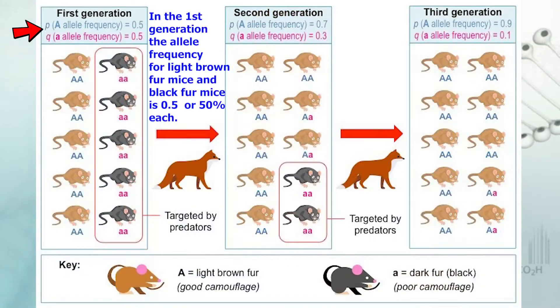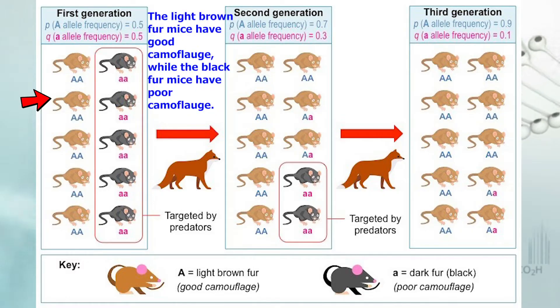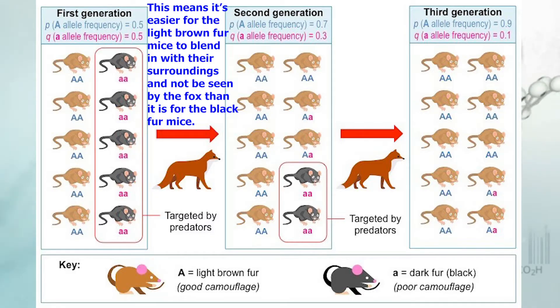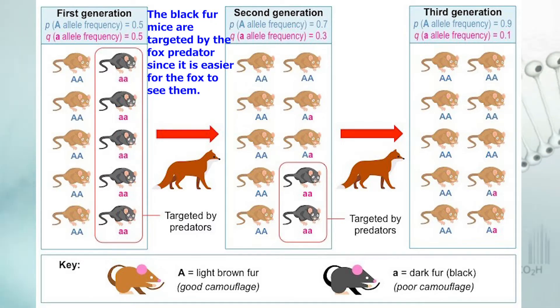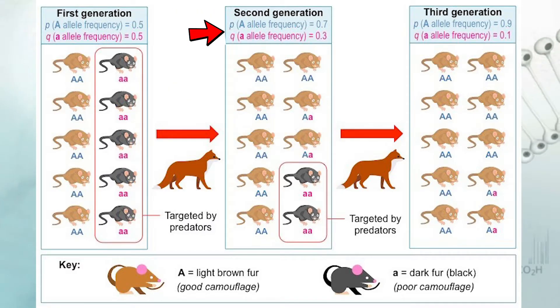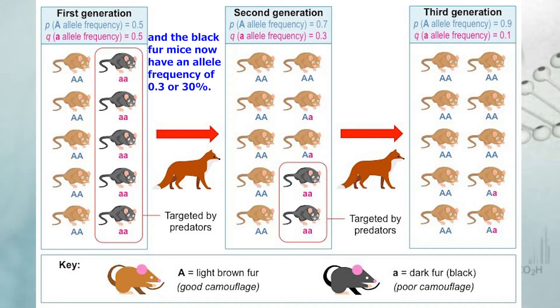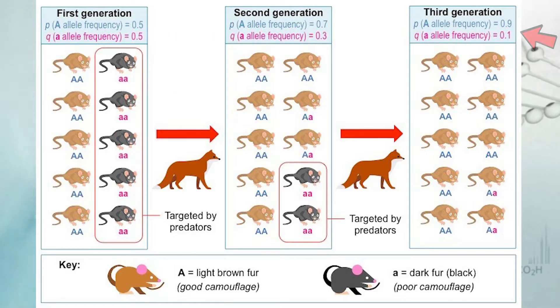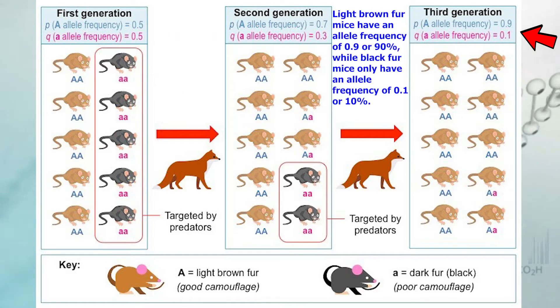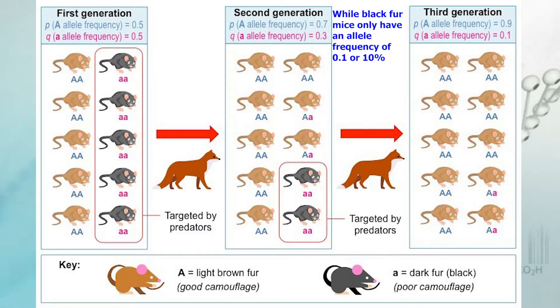Let's look at an example of the change in allele frequencies via natural selection. In the first generation, the allele frequency for light brown fur mice and black fur mice is 0.5 or 50% each. The light brown fur mice have good camouflage while the black fur mice have poor camouflage. This means it's easier for the light brown fur mice to blend in with the surroundings and not be seen by the fox. The black fur mice are targeted by the fox predator since it is easier for the fox to see them. In the second generation, the allele frequency has changed — light brown fur mice now have an allele frequency of 0.7 or 70%, and black fur mice now have 0.3 or 30%. In the third generation, light brown fur mice have an allele frequency of 0.9 or 90%.